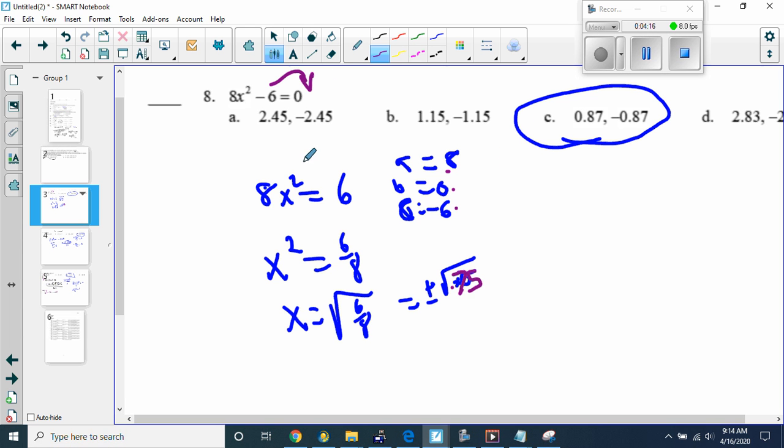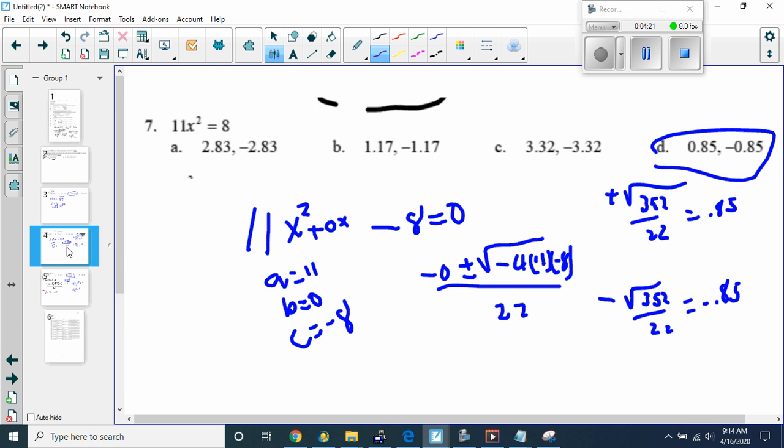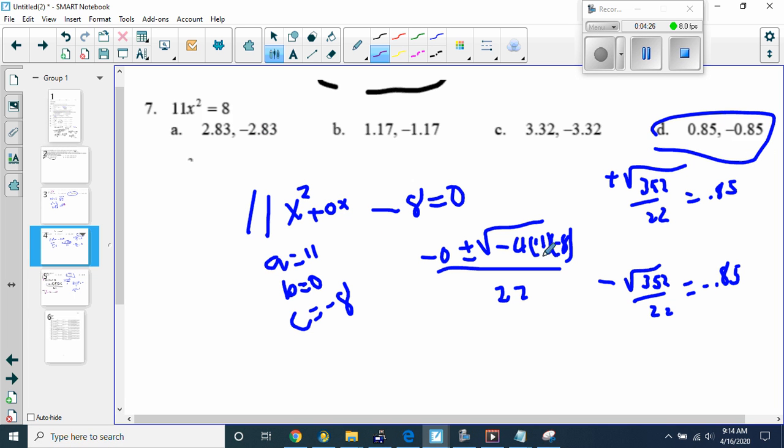Again, I would suggest you try all these questions and see if you can do them on your own. This one, you don't need to use the quadratic formula. You could. I think I did on this one. I brought the 8 over to this side, so now it's negative 8, but there's no B value. B is 0, and A is 11. So, I have my numbers here. I put them into the quadratic formula. I do the math, and I get square root of 352 divided by 22 equals negative 0.85, and positive square root of 352 divided by 22 is positive 0.85.